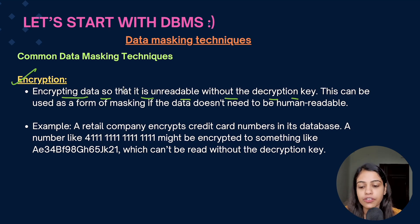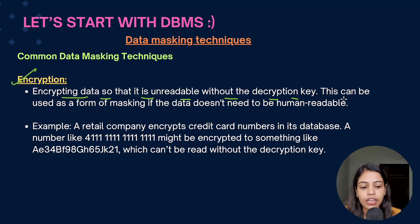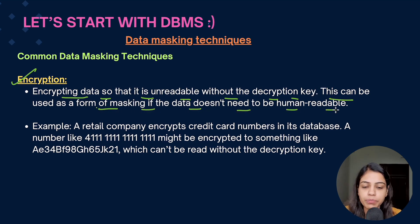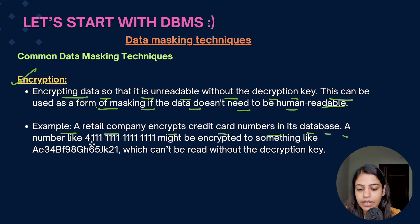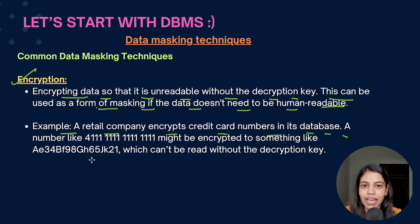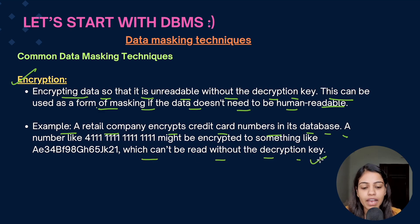The third data masking technique is encryption: encrypting data so it is unreadable without the decryption key. This can be used as a masking technique when the data does not need to be human-readable. For example, a retail company encrypts credit card numbers — a number like '4111-11' might be encrypted to a string of random characters, alphabets, and special characters that cannot be read without the decryption key.